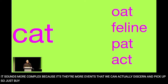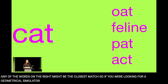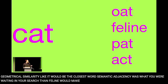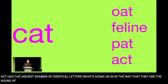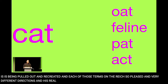By analogy: if 'cat' is the source file, depending on the algorithm you're using, any of several words might be the closest match. If you were looking for geometrical similarity, 'oat' would be closest. If semantic adjacency was weighted in your search, 'feline' would make the most sense. Phonetically, 'pat' is closest to 'cat'; 'act' has the highest number of identical letters. Each of those terms leads in very different directions and has very different implications for structuring meaning.